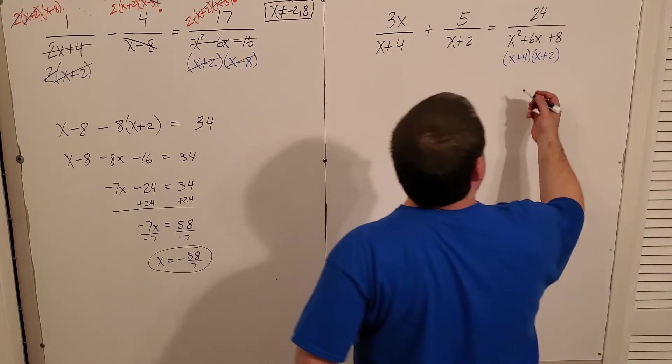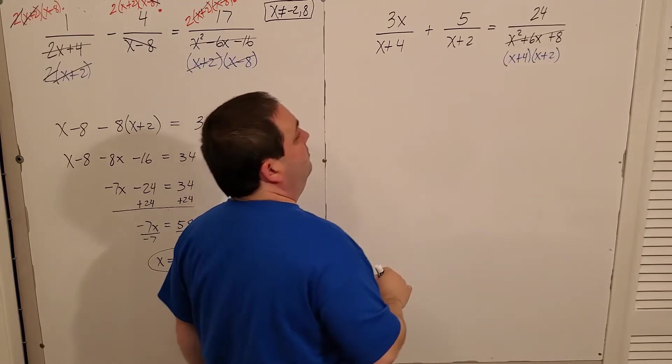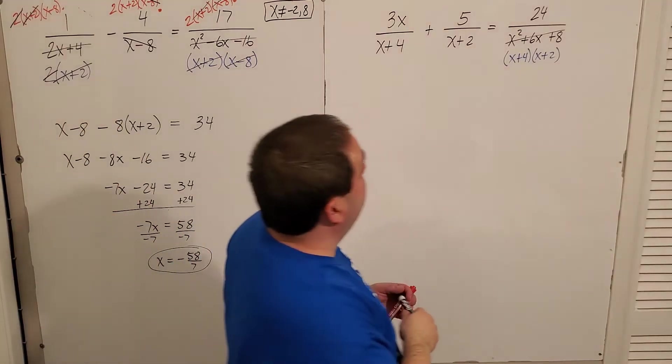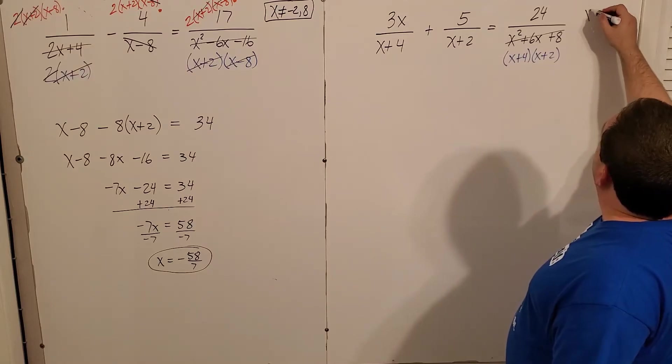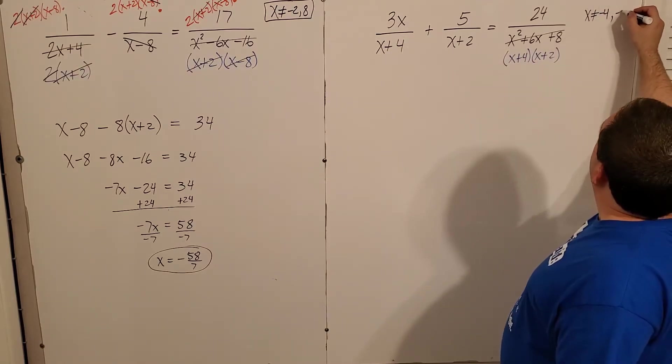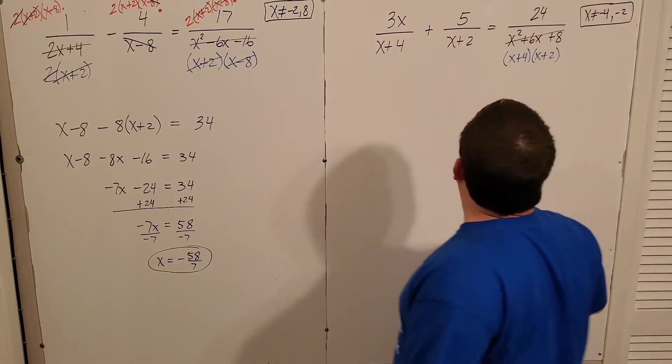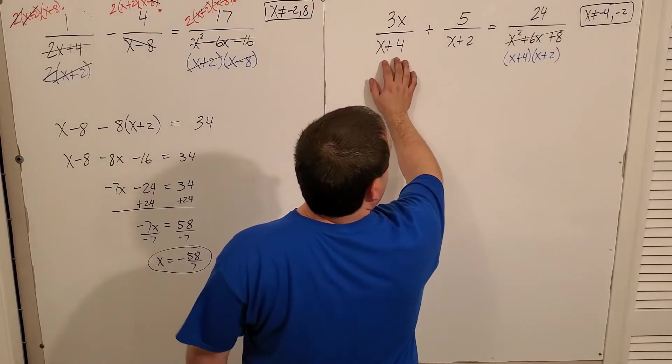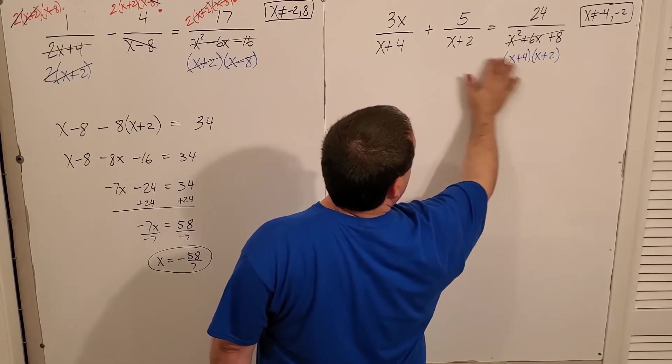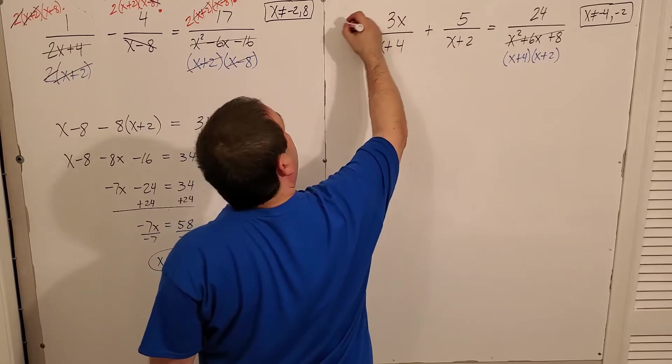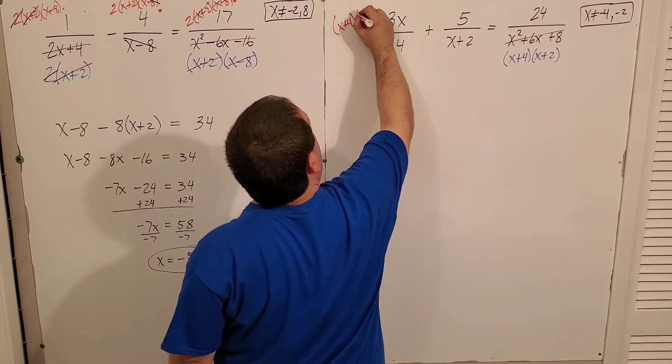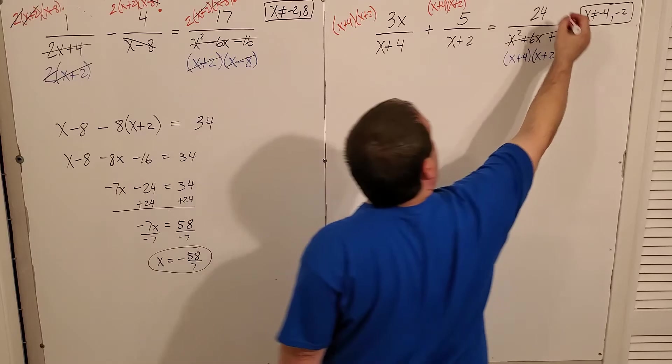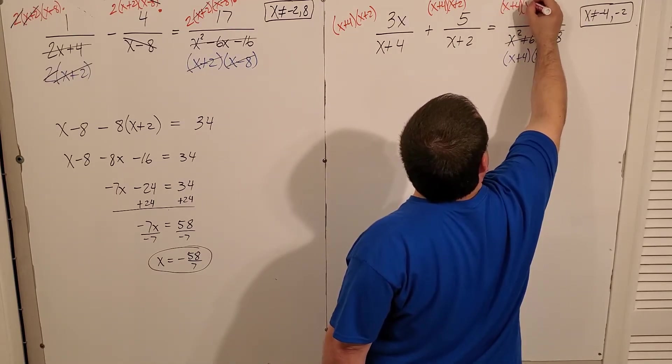And I want to multiply now to get rid of, oh, let's do our values, right? x can't be what? Negative four or negative two. x can't be either one of those. I'm going to multiply by whatever pieces I need. I need an x plus four. I need an x plus two. x plus four times x plus two. x plus four times x plus two. x plus four times x plus two.